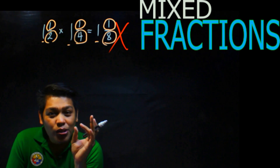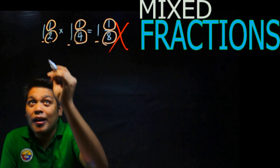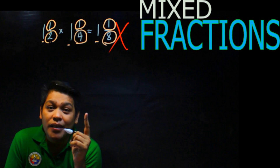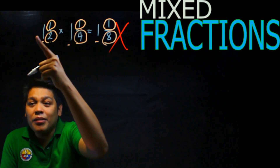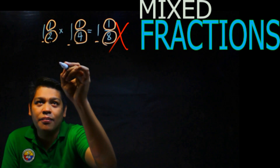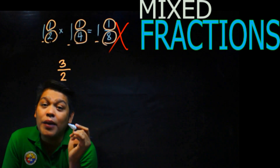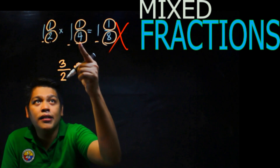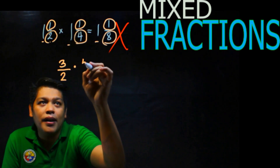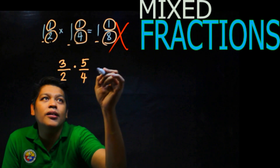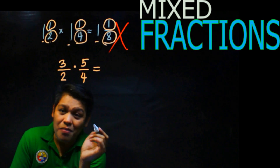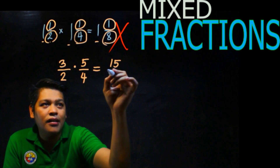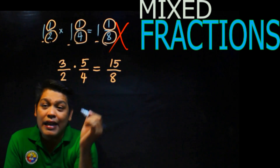What you must do first is change the mixed fraction to an improper fraction. Multiply the denominator by the whole number, then add the numerator. So 2 times 1 plus 1 equals 3, over 2 — that's 3 over 2. For the second: 4 times 1 plus 1 equals 5, over 4 — that's 5 over 4. Then multiply: numerator times numerator — 3 times 5 is 15; denominator times denominator — 2 times 4 is 8.